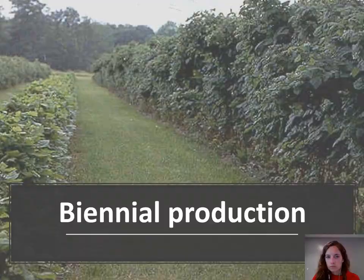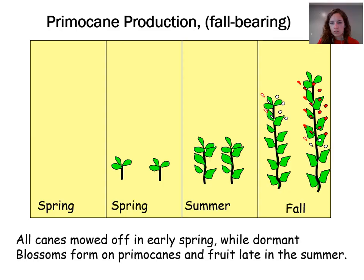In biennial production you have your established floricanes on one side being harvested this year and your emerging primocanes on the other side, with no floricanes in the way for those primocanes to establish — those will be harvested next year. Fall-bearing raspberries produce fruit every year on new canes, the primocanes, and the harvest season begins in early August and continues into October. Fall-bearing raspberries can also produce fruit on overwintering canes if they aren't mowed all the way down — if growers leave a bench cut, these will begin earlier in the season.